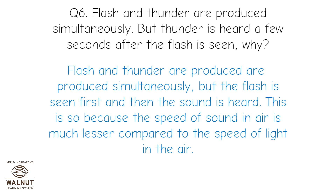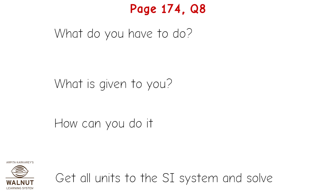Question 6: Flash and thunder are produced simultaneously, but thunder is heard a few seconds after the flash is seen. Why? Flash and thunder are produced simultaneously, but the flash is seen first and then the sound is heard. This is because the speed of sound in air is much less compared to the speed of light.